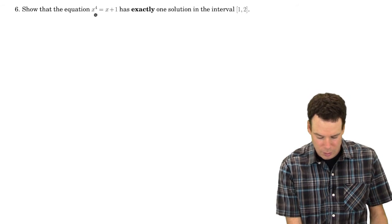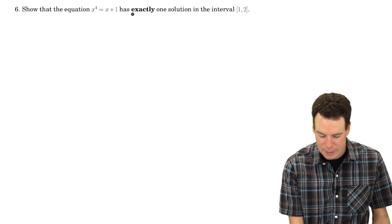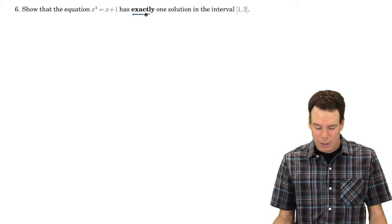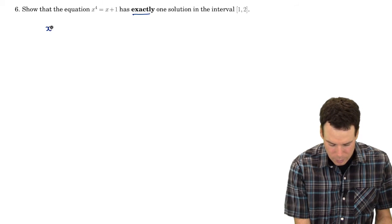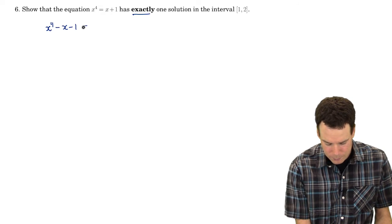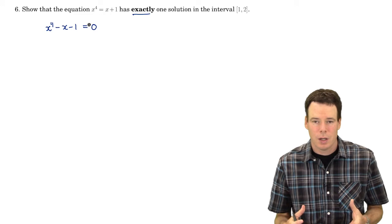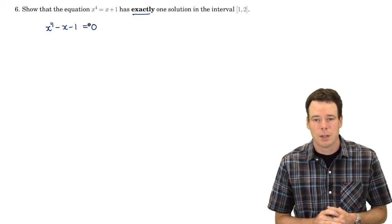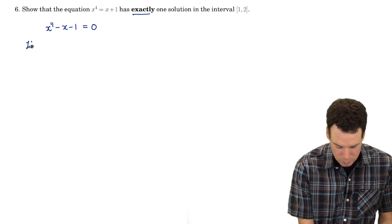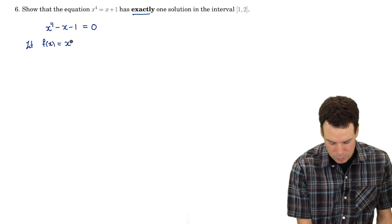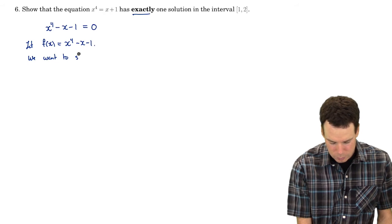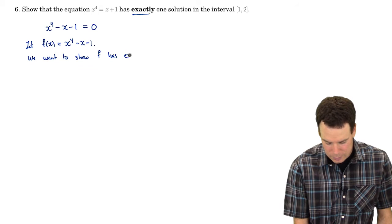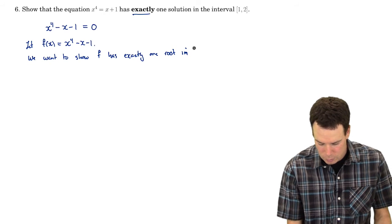In this example we're going to show that the equation x to the fourth equals x plus 1 has exactly one solution in the interval 1 to 2. A solution to this equation can be found by rearranging it, so that's really a question of showing whether the function f(x) = x to the fourth minus x minus 1 has a root. So let f of x be this degree 4 polynomial, and we want to show f has exactly one root in the interval 1 to 2.